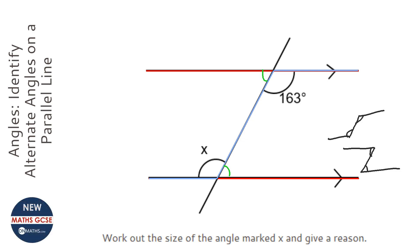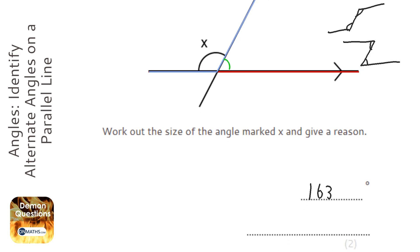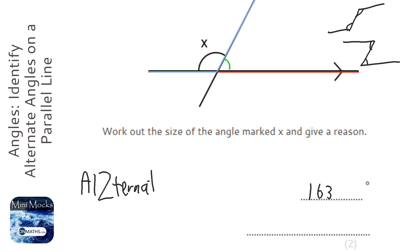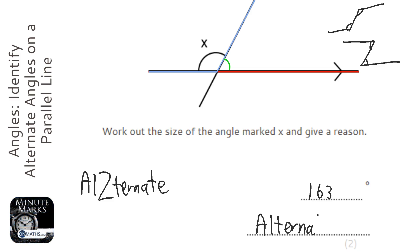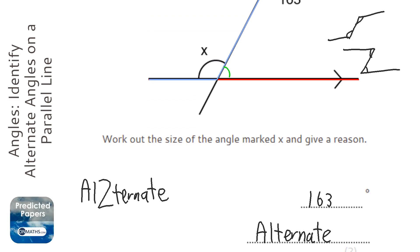If I was given this angle and this angle, it would look more like a Z. Z angles are going to be the same, so that's also going to be 163 degrees. But we can't call them Z angles — we have to use the proper word. I remember this by putting a Z in the word 'alternate.' You must write down 'alternate angles' as the reason why x is 163. Remember: bung a Z in 'alternate' — if they are Z angles, they are equal, and the reason is alternate angles.